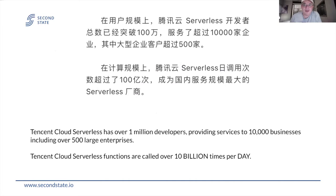It's the same for other clouds as well. Let's look at a leading cloud in China — Tencent Cloud. It's a leading cloud provider in China with over 1 million developers, providing services to 10,000 businesses including 500 large enterprises. How many serverless function calls does it see per day? 10 billion calls per day. People are writing a large number of high-traffic, heavily-used applications using Tencent Cloud serverless as a backend service. It shows that it's really popular and developers really want to use it.